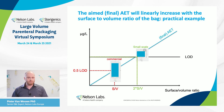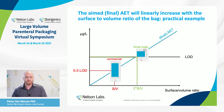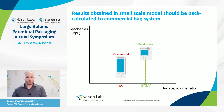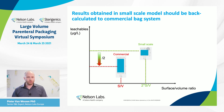For example, if the final AET in a commercial bag is two times lower than the limit of detection of our methodology, we need to use a small-scale bag with a surface-to-volume ratio at least two times higher to reach the limit of detection. By applying this strategy, you effectively increase the final AET up to your limit of detection. You then need to perform a back-calculation to translate your results into the commercial bag equivalent — in this case, dividing the concentrations detected in the small-scale bag by two.